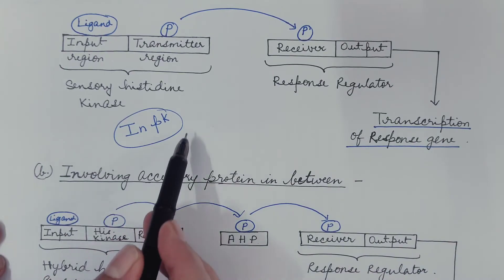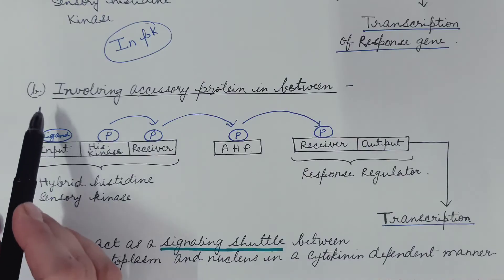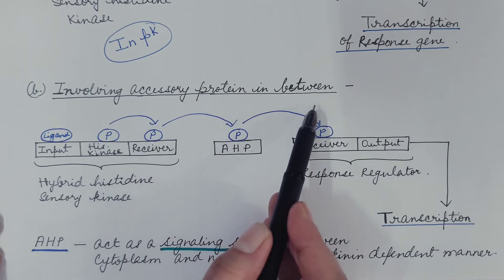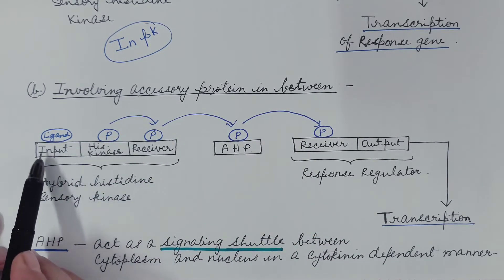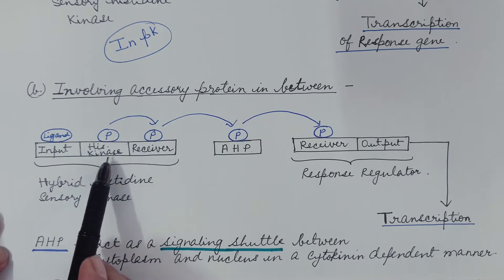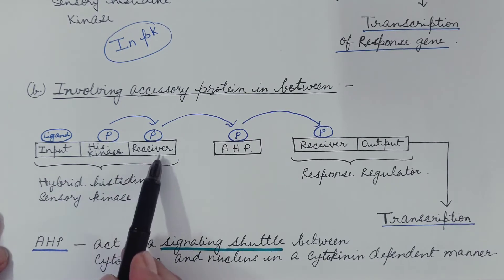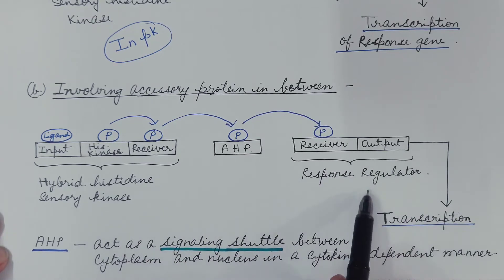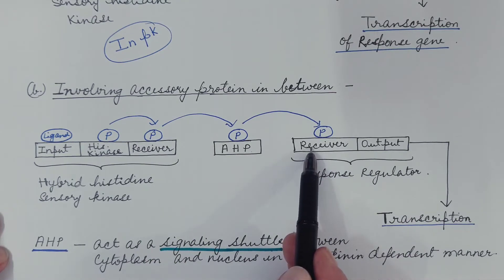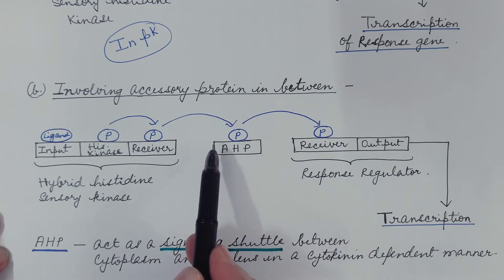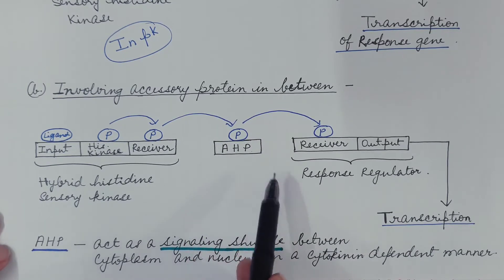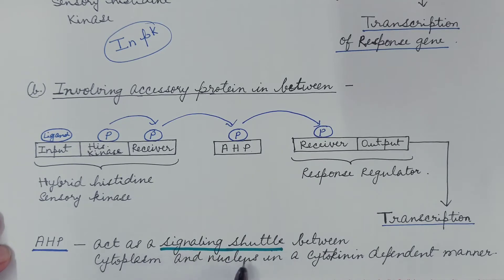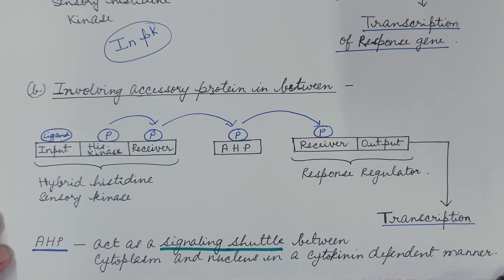This then phosphorylates the receiver region and output region of the response regulator, leading to transcription of the response gene. This type of signaling system is seen in prokaryotes. The second type involves an accessory protein in between. Like the first type, it has a hybrid histidine sensory kinase composed of an input region, histidine kinase region, and receiver domain, and a response regulator consisting of a receiver region and output region. It also has an accessory protein — here it is AHP — which acts as a signaling shuttle between cytoplasm and nucleus in a cytokinin-dependent manner.